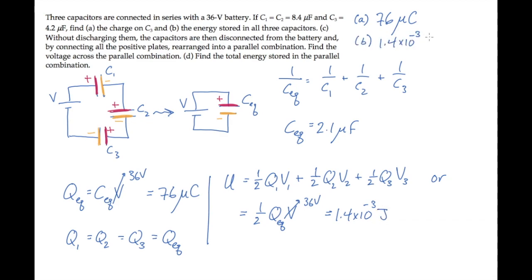In part C, the battery is removed from the circuit, and the capacitors are reconnected with all their positive plates together. So the reconfigured circuit will look like this. All the red or positive plates connected, all the negative plates connected, and we're asked to calculate the voltage across this parallel combination. I'll call it V sub P.